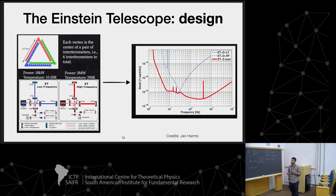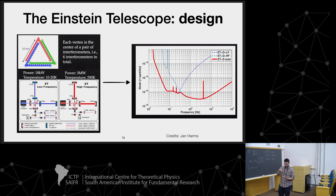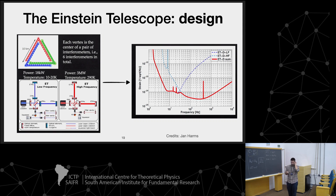Basically, you will have an independent detector that looks at low frequencies — lower laser power and cryogenic temperatures — and high-frequency detectors with much higher power and room-temperature detectors. So the idea is to have for each of the three detectors two detectors: one looking at low frequencies and one looking at high frequencies.